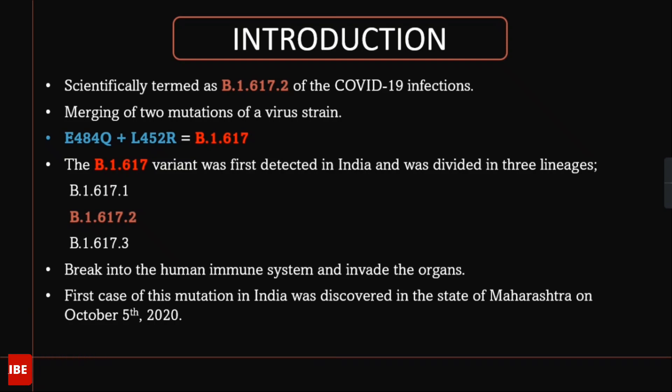How is it formed? How is it originated? It is formed by the merging of two mutations of a virus strain. There are two mutants: E484Q and L452R. These are the two double mutants, and they are merged, combined, or fused with each other in order to form a triple mutant.